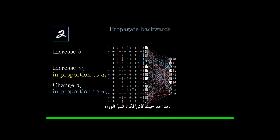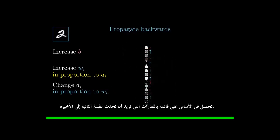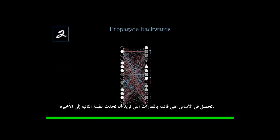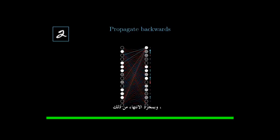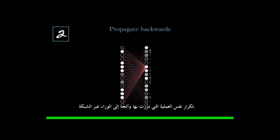This right here is where the idea of propagating backwards comes in. By adding together all these desired effects, you basically get a list of nudges that you want to happen to this second-to-last layer. And once you have those, you can recursively apply the same process to the relevant weights and biases that determine those values, repeating the same process I just walked through and moving backwards through the network.